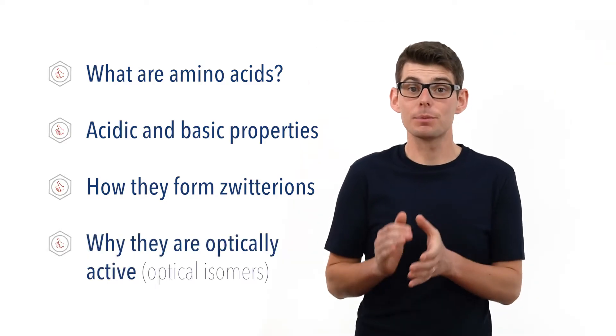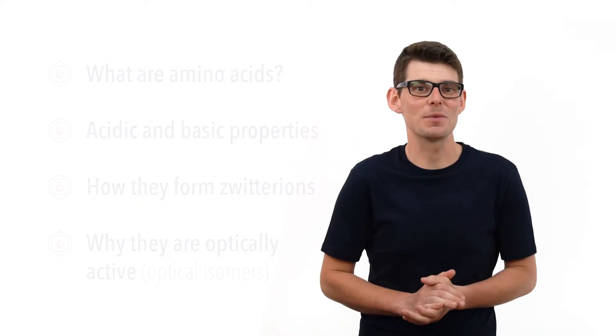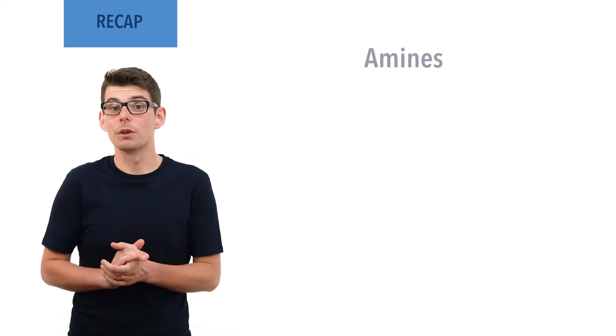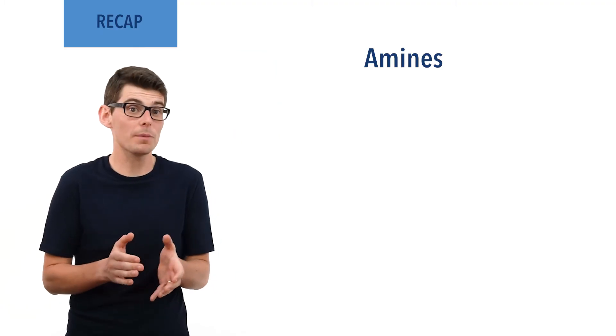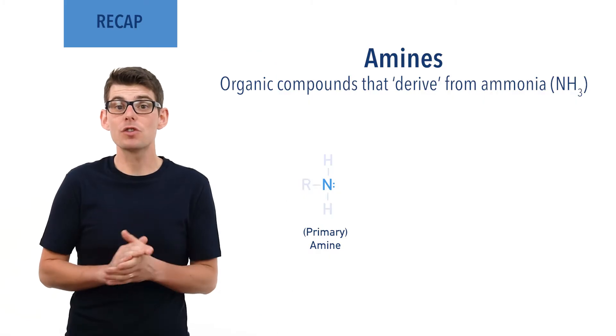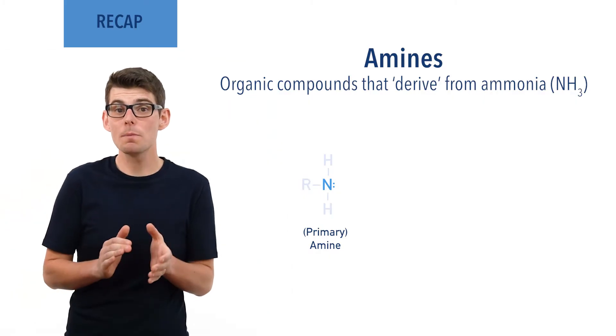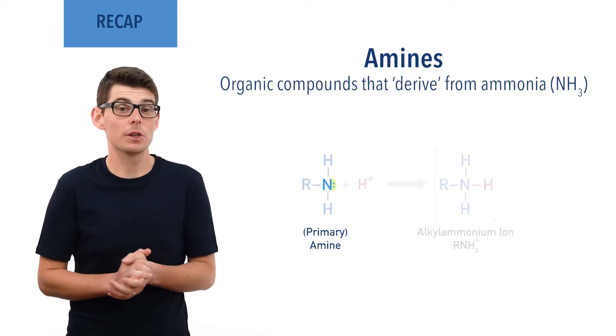Amines and proteins have been covered in separate videos — check the links in the description below. Before we talk in detail about amino acids, there are a few essential ideas you need to be comfortable with. Amines are a group of organic compounds that derive from ammonia, NH3. They have a nitrogen with a lone pair of electrons that can act as a base and accept H+ ions.